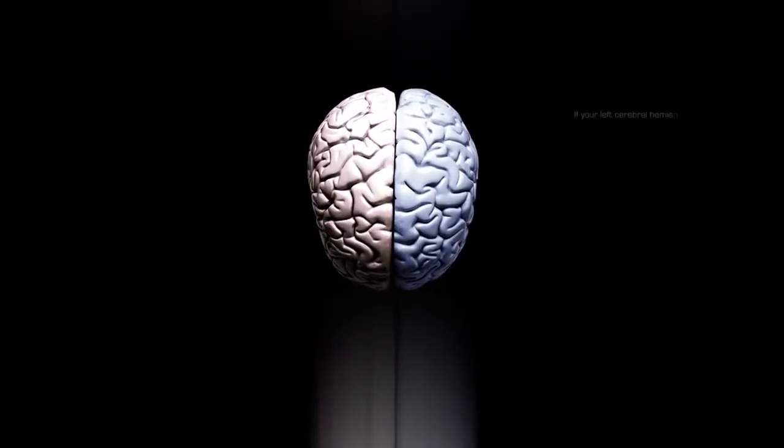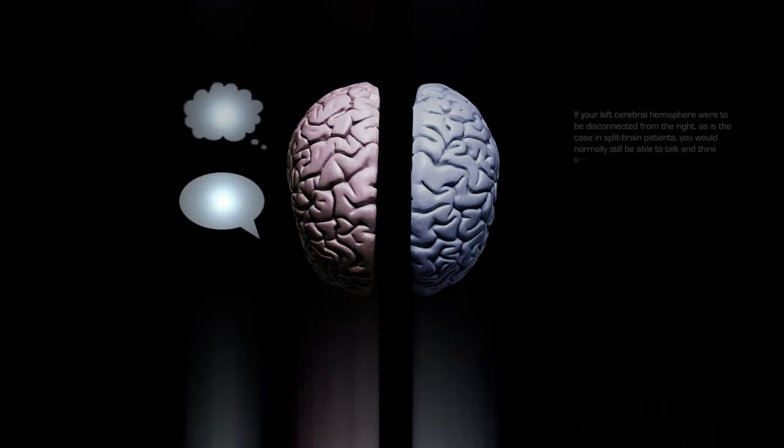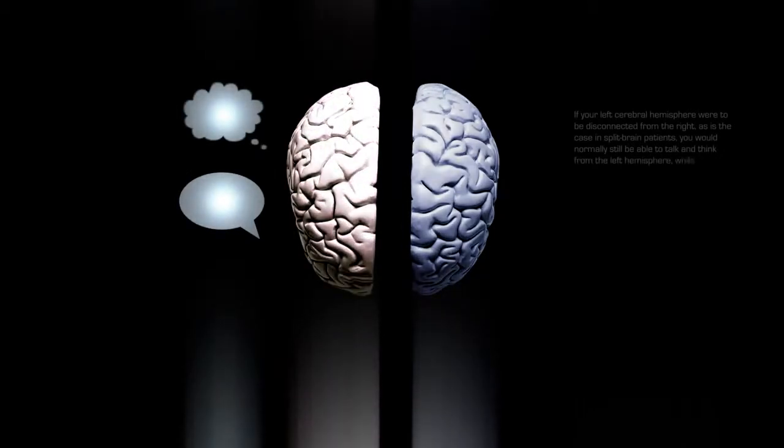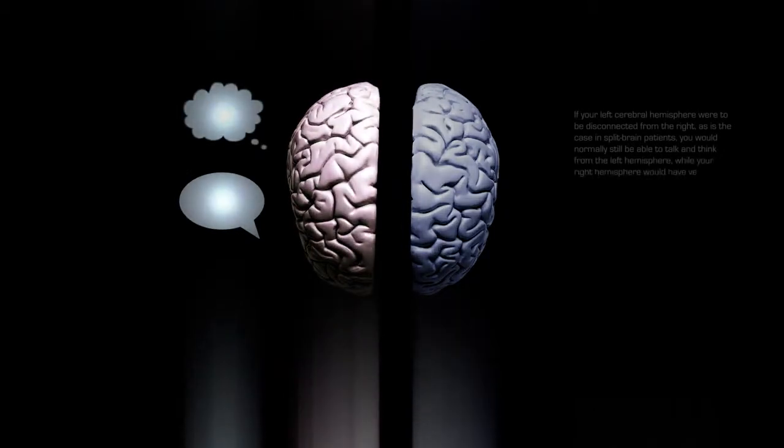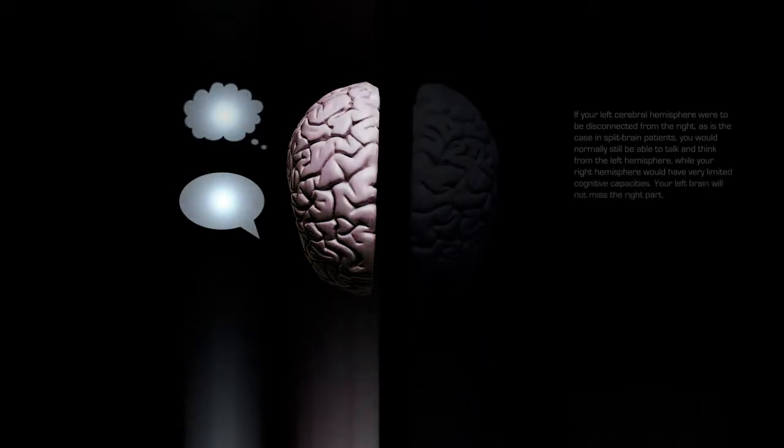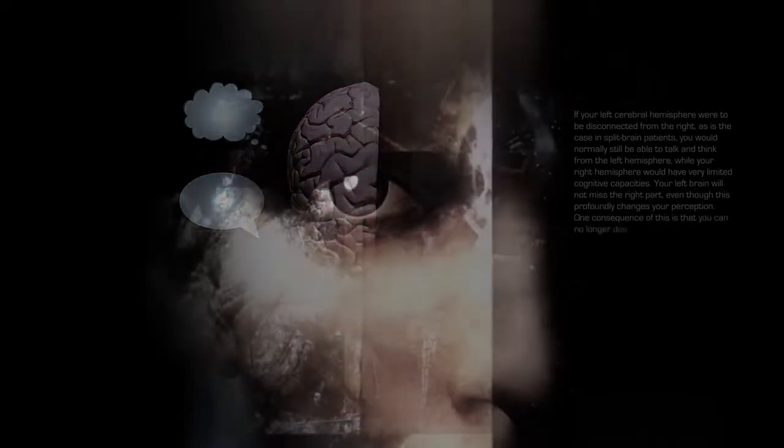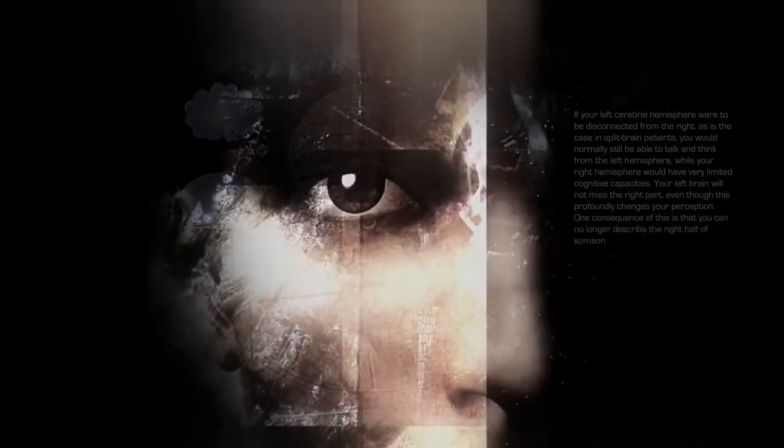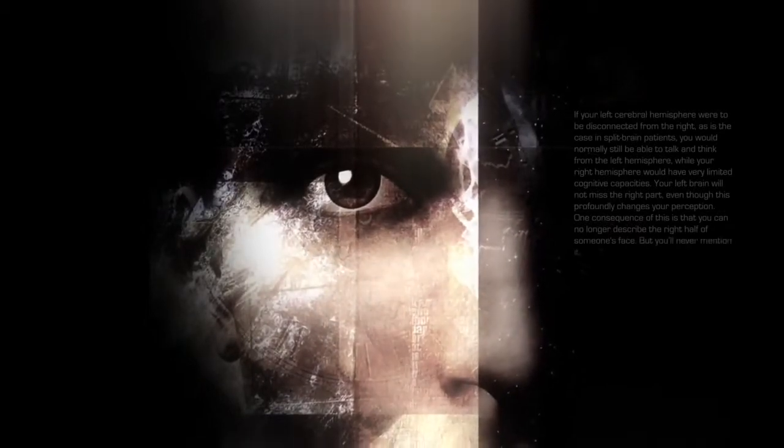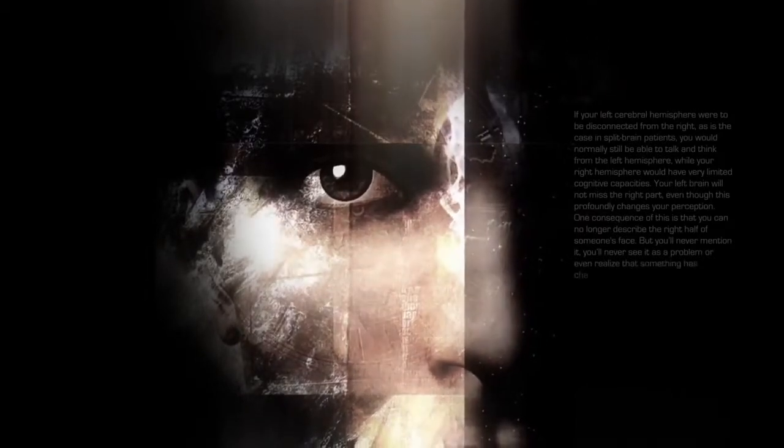If your left cerebral hemisphere were to be disconnected from the right, as is the case in split brain patients, you would normally still be able to talk and think from the left hemisphere, while your right hemisphere would have very limited cognitive capacities. Your left brain will not miss the right part, even though this profoundly changes your perception. One consequence of this is that you can no longer describe the right half of someone's face, but you will never mention it. You will never see it as a problem or even realize that something has changed.